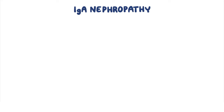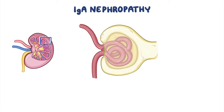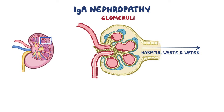IgA nephropathy is a disease associated with the kidneys, which are two bean-shaped organs in our body that filter out toxic waste products and excess water from blood and excrete them in the urine. Inside each kidney there are clusters of capillaries, that is, tiny blood vessels, called glomeruli, which act like filters of the kidney to let water and harmful wastes through, while keeping important things like red blood cells and proteins in.